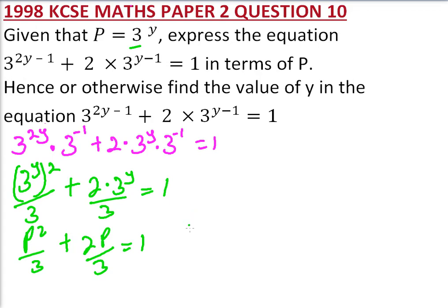Multiply throughout by 3, so you have P squared plus 2P. When you multiply the right side by 3, 1 times 3 is 3. Bring it to the left side, so you have P squared plus 2P minus 3 equals 0.